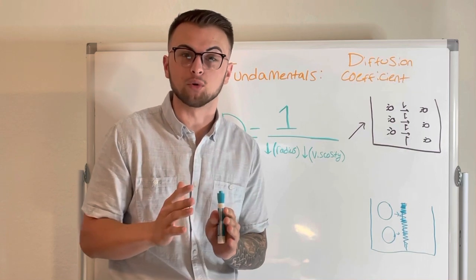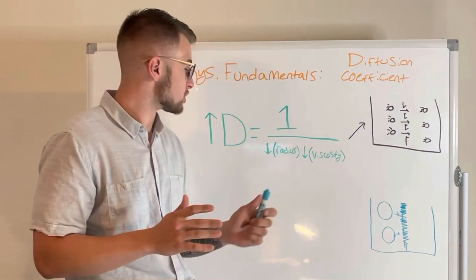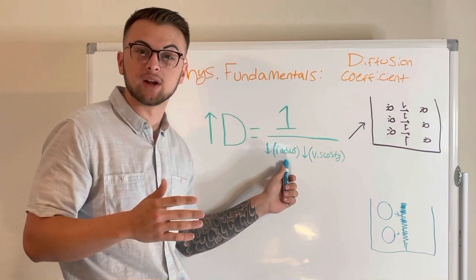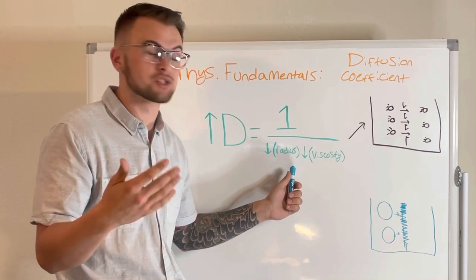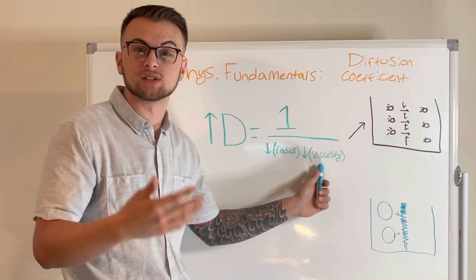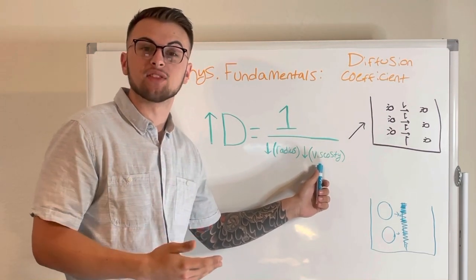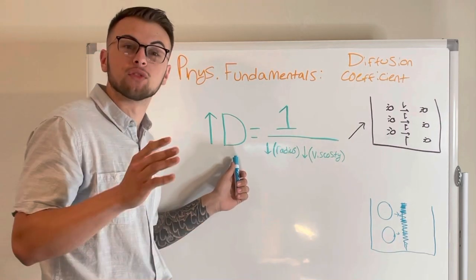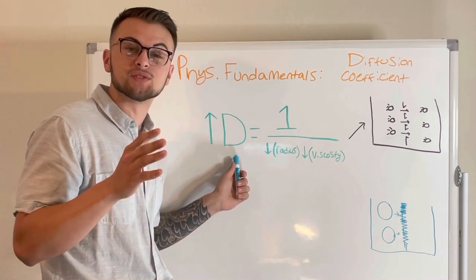For example, if we were to make a bumper car smaller or decrease the radius and the surface more slick or decrease the viscosity, we would say that the diffusion coefficient for that particular bumper car is very high.